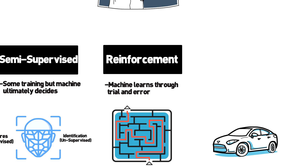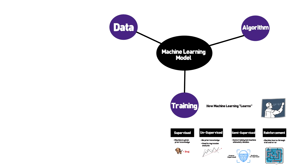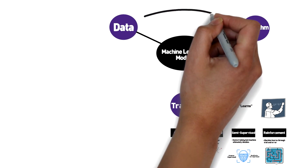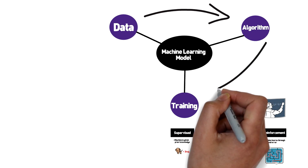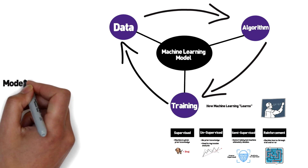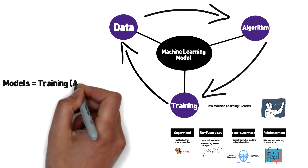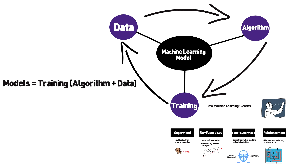At this point, it's important to note that how the machine learns the data is an important part of the training process that makes up the overall machine learning model. But models themselves are not to be confused with algorithms. As you train an algorithm with data, it becomes a model. So to put it another way, models equal training times algorithm plus data. The more data and time that runs the algorithm, the more fine-tuned it becomes, which leads to better decisions.